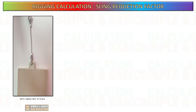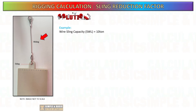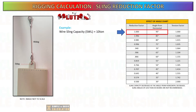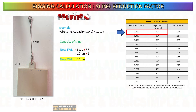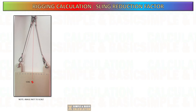Let us determine the capacity of the sling when using a single vertical hitch. I apologize for the photo appearing bent, but for the purposes of this example, let's assume it is straight. Assuming the safe working load (SWL) of the sling is 10 tons, determine the sling reduction factor by referring to the chart. The sling reduction factor is 1 for a 90-degree angle. By multiplying the SWL with the sling reduction factor, we can get the new SWL of the sling. Because the sling is at 90 degrees, there is no reduction factor applied to it.